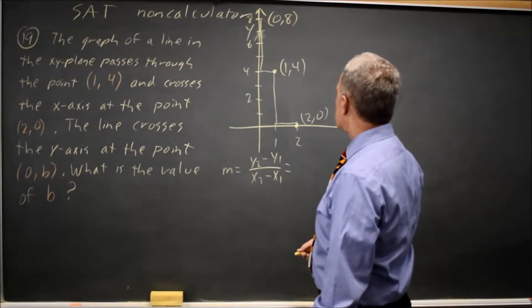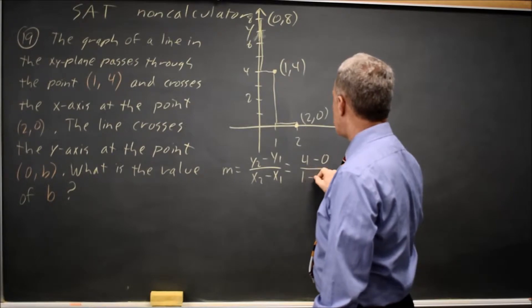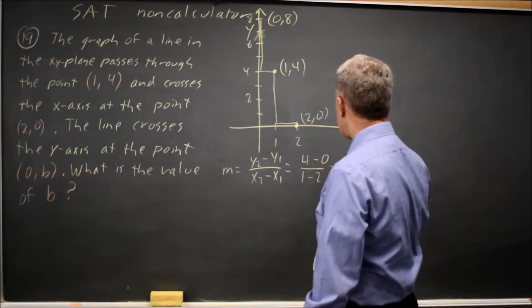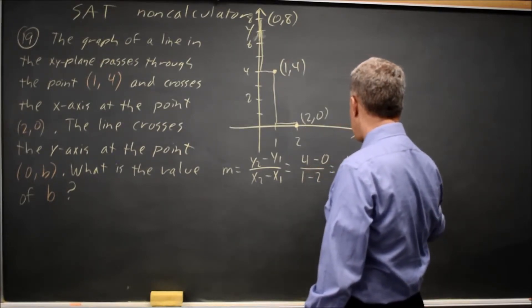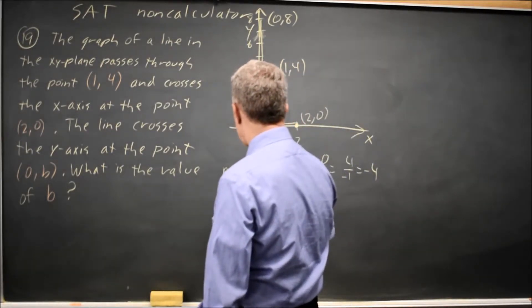So the y-coordinates are 4 minus 0 and the x-coordinates are 1 minus 2, which is 4 over negative 1 equals negative 4. So my equation is y equals mx plus b.